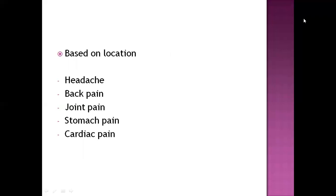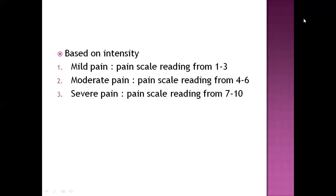Based on location, pain can be divided as headache, back pain, joint pain, stomach pain, and cardiac pain — these are locations of the body from head to toe. Based on intensity, pain can be divided into mild, moderate, and severe pain. Mild pain scale reading ranges from 1 to 3, whereas moderate pain scale ranges from 4 to 6, and severe ranges from 7 to 10.